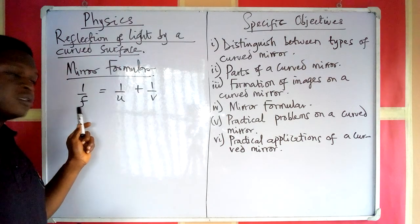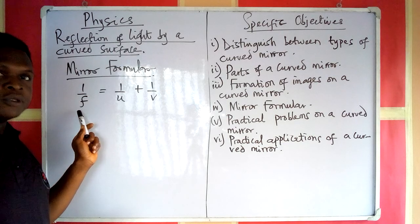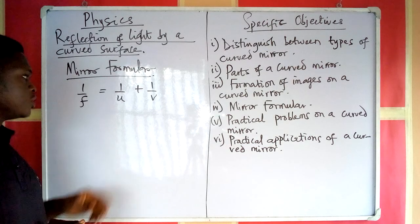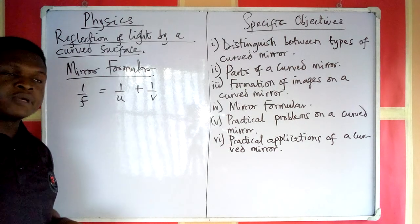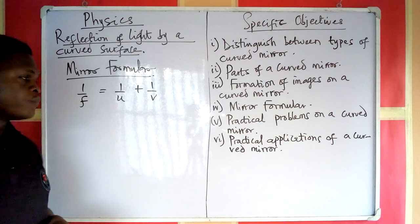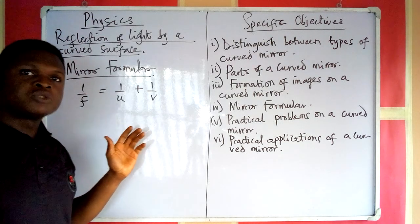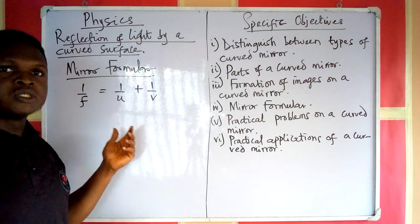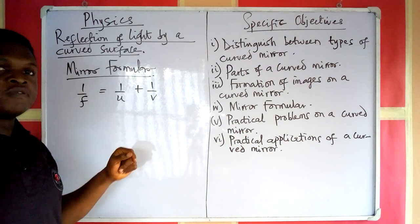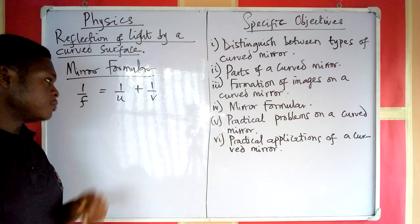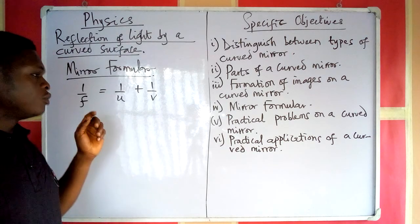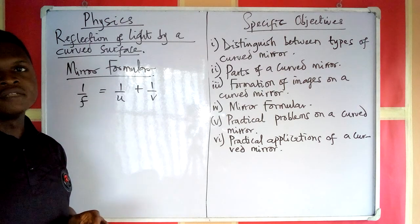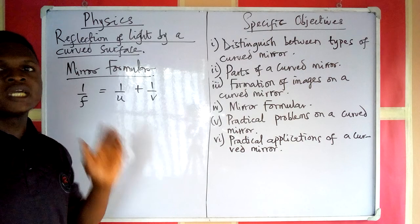We can easily find the focal length of a given mirror if we know the object and image distances. It is very important that you know this relationship, as it will help us in solving practical problems. The next formula we use is what we call magnification, and magnification is used for any kind of mirror.